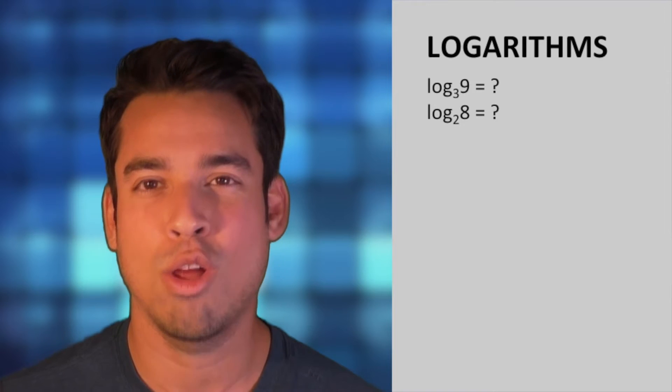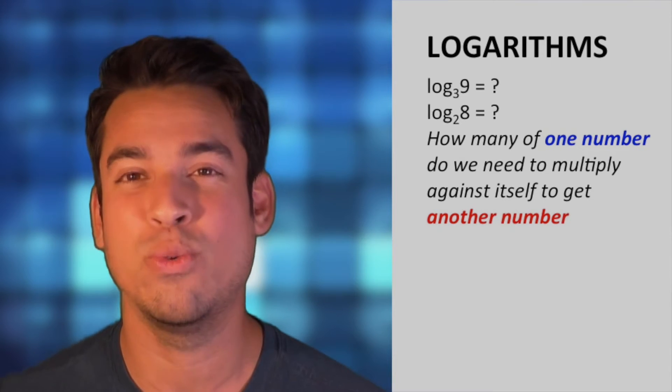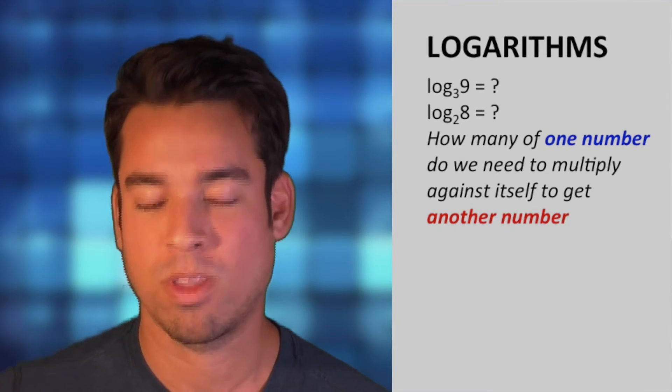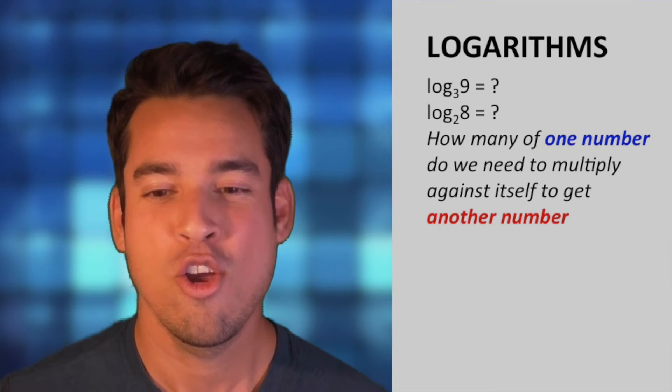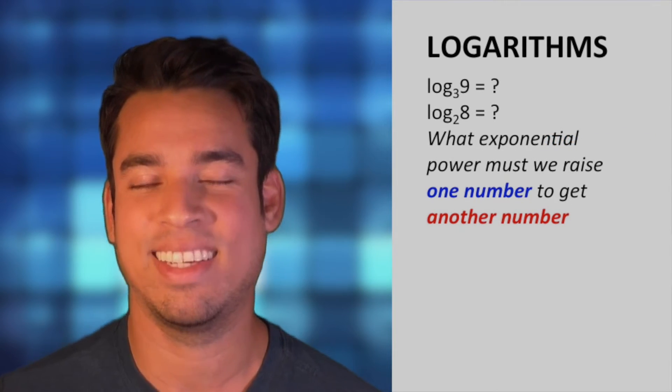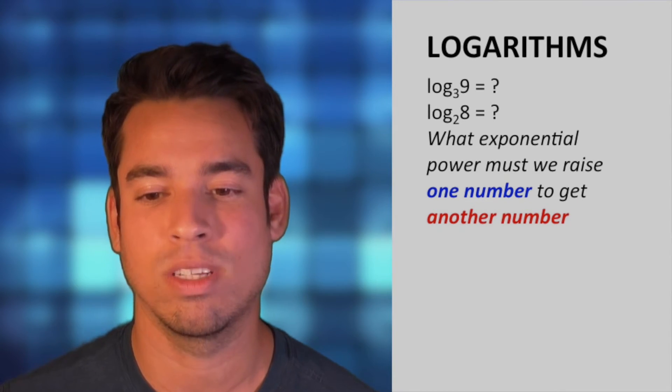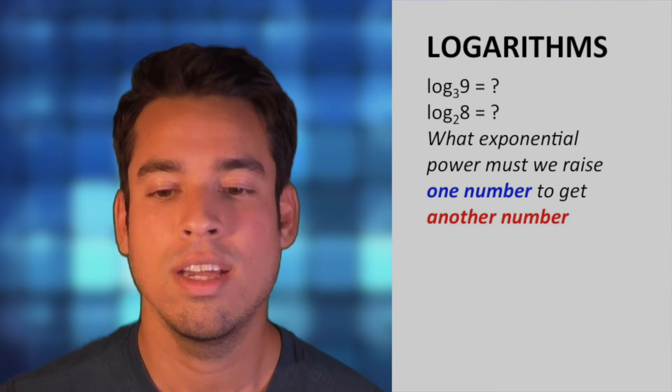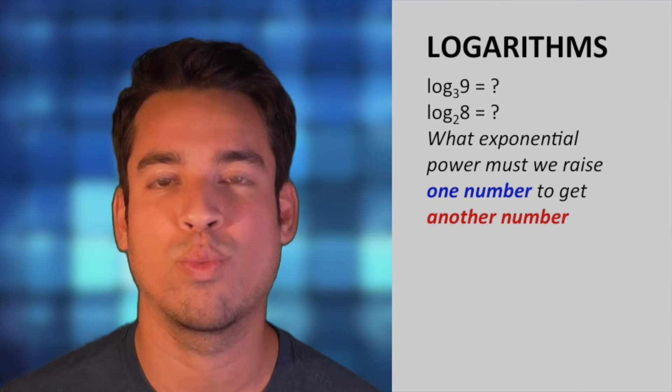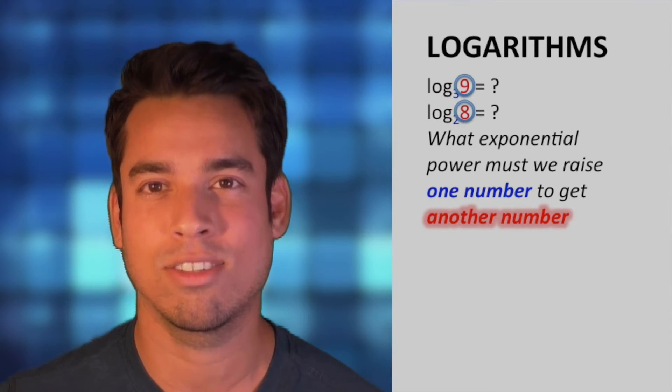Here's how to define it: a logarithm is just asking the question, how many of one number do we need to multiply against itself to get another number? Put another way, what exponential power must we raise one number to get another number? So really, logarithms are all about exponents. You see it's saying what exponential power must we raise one number in blue to get another number in red, and all this is going to be color-coded as we go along.